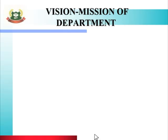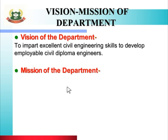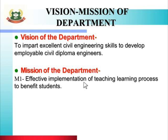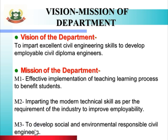Let us see the vision and mission of the department. The vision of the department is to impart excellent civil engineering skills to develop employable civil diploma engineers. The mission has three parts: Mission 1 is effective implementation of the teaching-learning process to benefit students; Mission 2 is imparting modern technical skills as per industry requirements to improve employability; Mission 3 is to develop socially and environmentally responsible civil engineers. To achieve this vision and mission, we will go through the learning outcomes, which include course outcome, program outcome, and unit outcome.